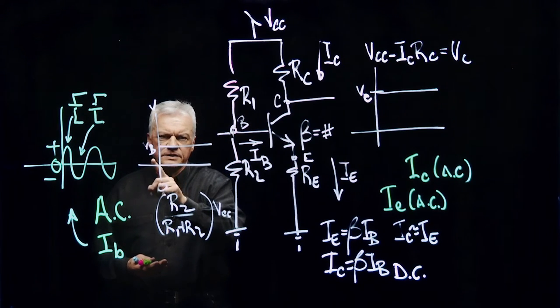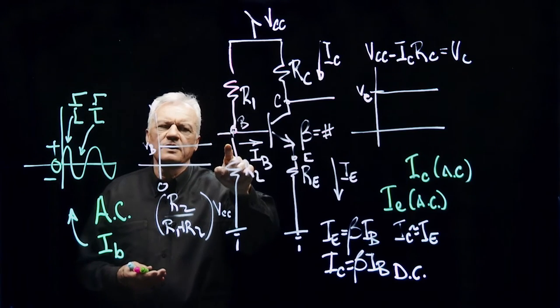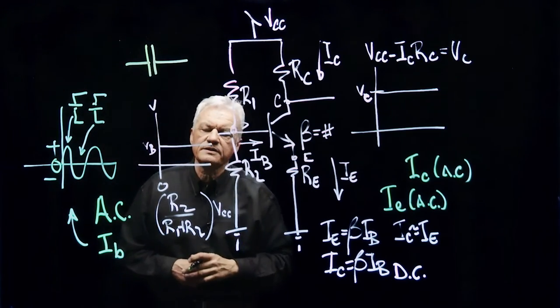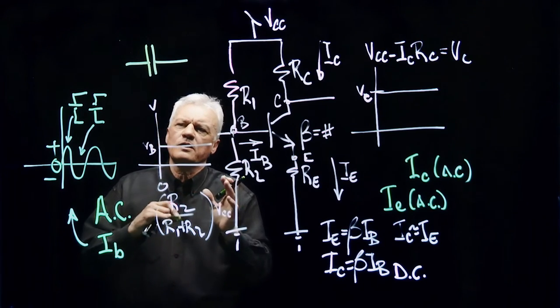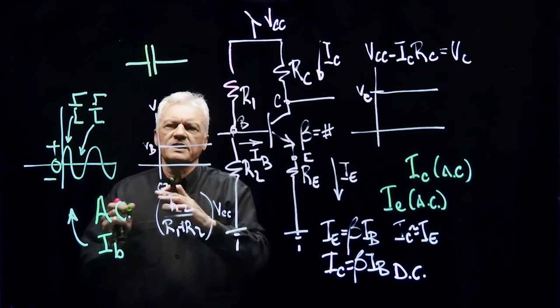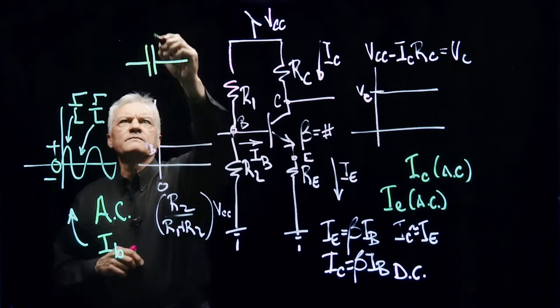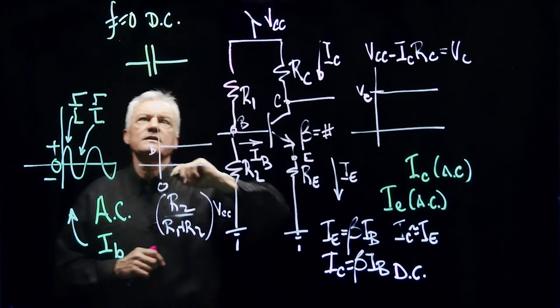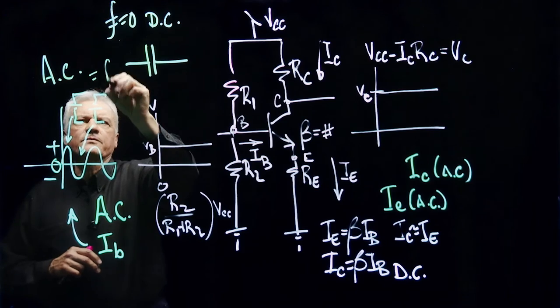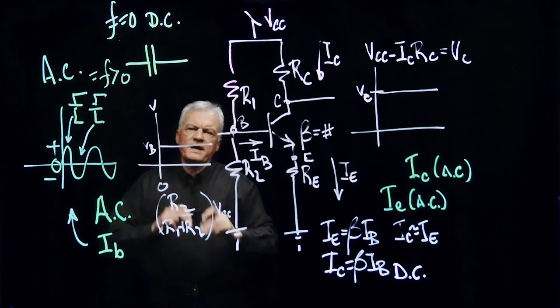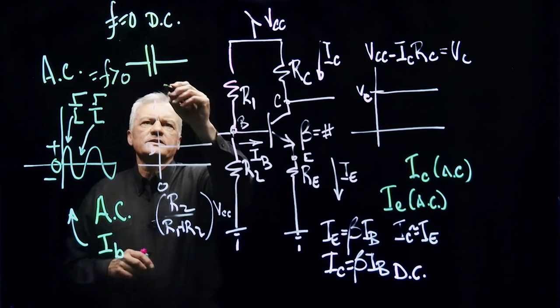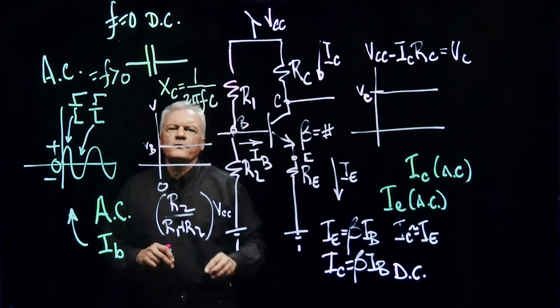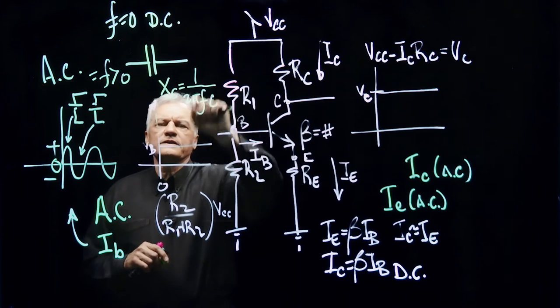So connecting this signal to this device, which already has a bias set up here, without affecting this bias point, I need to couple it. I'm going to couple it in with what is called a capacitor. This is a symbol for a capacitor. Capacitor is a physical device, like a wall. Nobody's coming through that wall, but you know people are on the other side. The more noise they make, the more you will be able to hear it through the wall. DC, DC is steady. DC has what is called a frequency that is equal to zero. AC is a changing signal. AC has some frequency greater than zero.